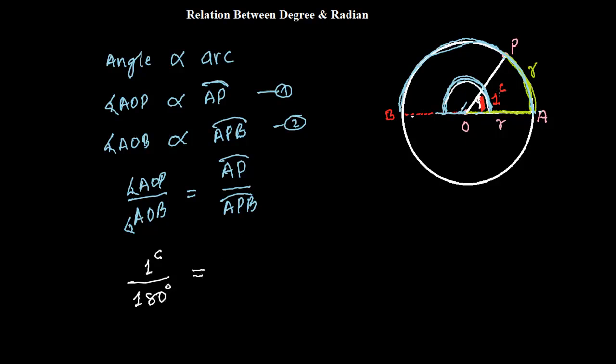And let's go this side again. What is AP? This is equivalent to radius. And what is APB? This is half semicircle, or you can say half circumference. And complete circumference is how much? Complete circumference is 2πr.